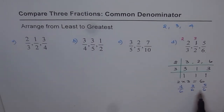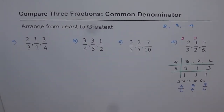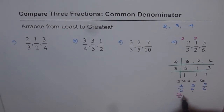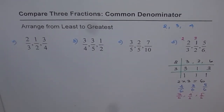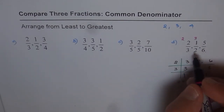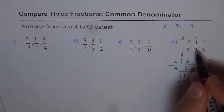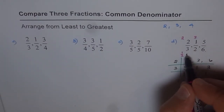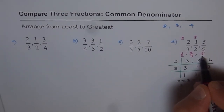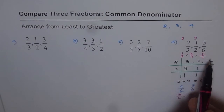Now, which is greatest and which is least? The least is 3 over 6, then 4 over 6, then 5 over 6. But these are equivalent fractions, not the original ones. So 3 over 6 was 1 over 2 — that is the least. Then 4 over 6 is 2 over 3. And the greatest is 5 over 6. So arranged from least to greatest: 1 over 2, 2 over 3, 5 over 6.